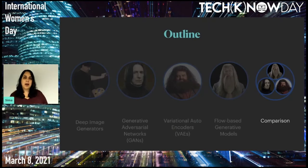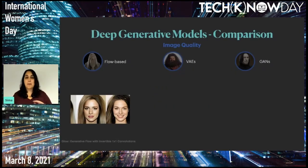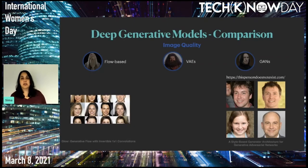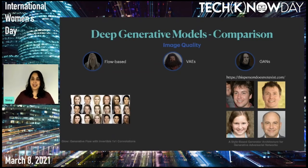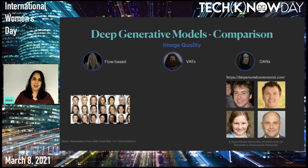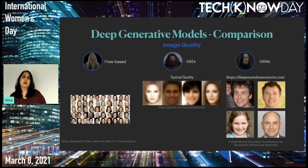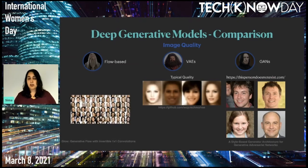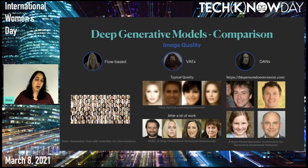Now that we've learned about the three main families of generative models, why should you use flow-based models? Quality-wise, they generate amazing images — the same high resolution we're used to from GANs, which are known for high-resolution images. There's even a website called 'This Person Does Not Exist' with images generated by GANs that are so realistic the name is fitting. This is much better than the typical quality of a variational autoencoder, which tends to generate blurry images.